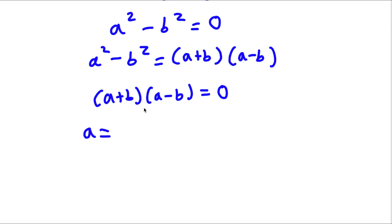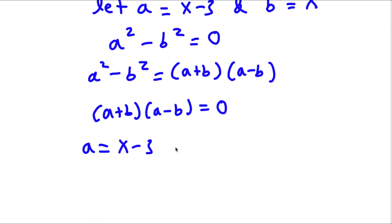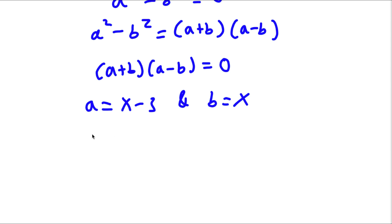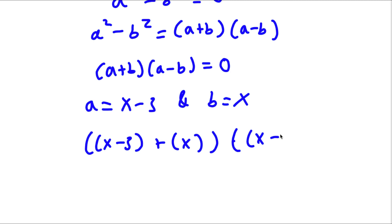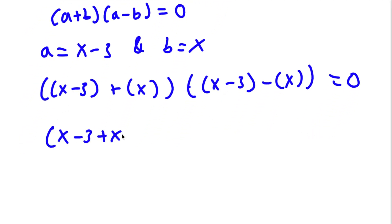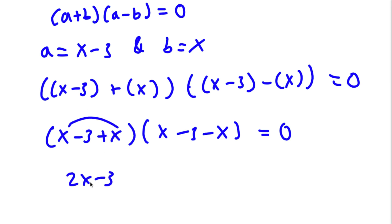Remember how we said a was equal to x minus 3 and b is equal to x. So now if I plug these values in for a and b, I get x minus 3 plus x times x minus 3 minus x, and this is equal to zero. Now to simplify, I have x minus 3 plus x times x minus 3 minus x is equal to zero. We can combine like terms: x plus x is 2x, so I have 2x minus 3 times x minus x. These two cancel out, so I'll simply be left with negative 3 is equal to zero.